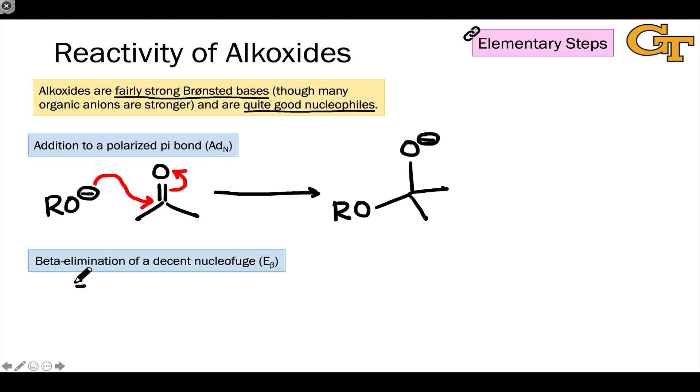We also see alkoxides that are embedded in more complex structures engaging in beta elimination. And here again, this isn't strictly a step that involves an alcohol functional group, as there's almost always a heteroatom bound here. But nonetheless, because it involves an embedded O⁻, I thought it was useful to include it here.